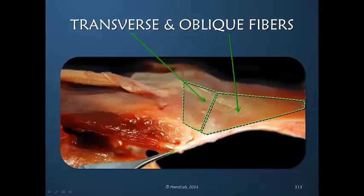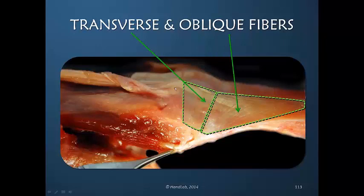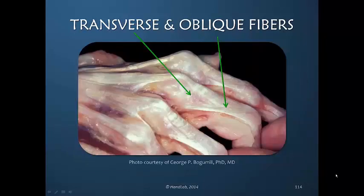Here is simply another image of transverse and oblique fibers. We're looking at the proximal aspect — this would be the metacarpal area — with the distal aspect of the finger here. You can see this lumbrical muscle coming forward and going into the lateral band, and an interosseous muscle that is inserting. Here is the extensor digitorum communis beginning to form the central slip. We can clearly see the fibers here. In another image, we see the obliquity here very clearly and the transverse fibers here.